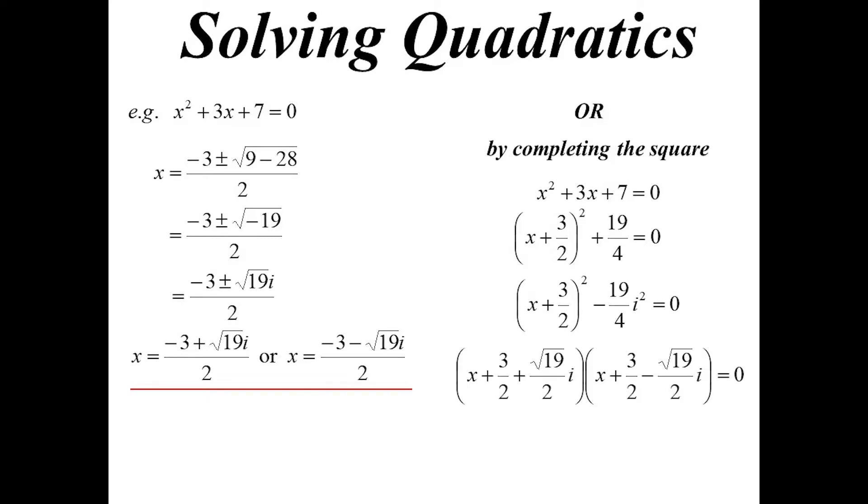But I can now rewrite that 19 on 4 as minus 19 on 4i squared, and I have the difference of two squares. So therefore, if I was to factorize that completely, I get X plus 3 on 2 plus root 19 on 2i, X plus 3 on 2 minus root 19 on 2i.